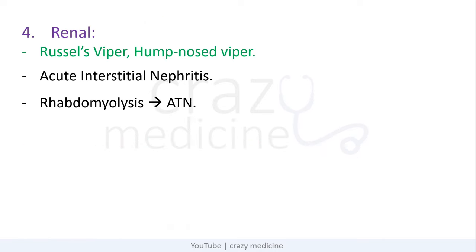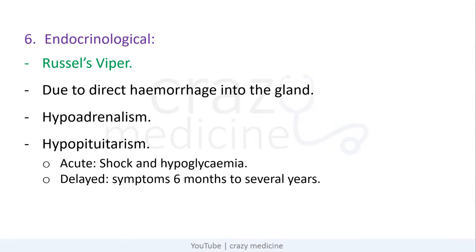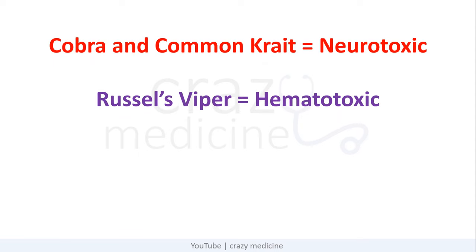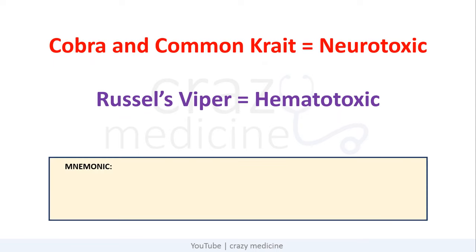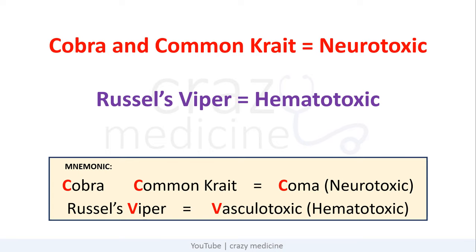The next is renal toxicity, usually caused by Russell's viper or hump-nosed viper. It causes acute interstitial nephritis and also rhabdomyolysis, which causes acute tubular necrosis. Then myotoxicity, usually caused by Russell's viper, which causes rhabdomyolysis leading to acute kidney injury and acute tubular necrosis. The last is endocrinological toxicity, caused by Russell's viper due to direct hemorrhage into the gland. It manifests as hypoadrenalism or hypopituitarism, which may present acutely with shock and hypoglycemia, or as delayed symptoms presenting after 6 months to several years. To remember: cobra and common krait — C for cobra, C for krait, C for coma, i.e. neurotoxicity. And Russell's viper — V for viper, V for vascular toxic, i.e. hematotoxicity.